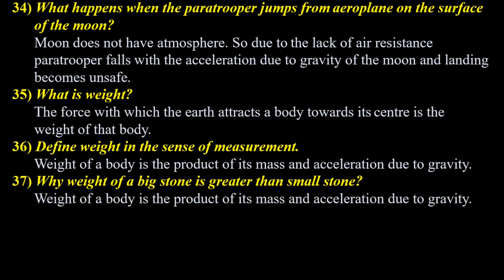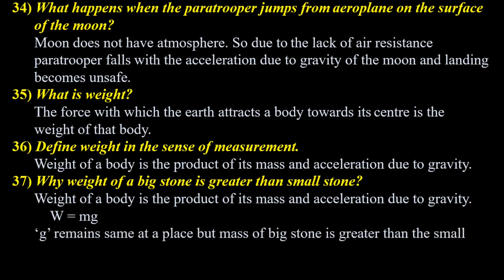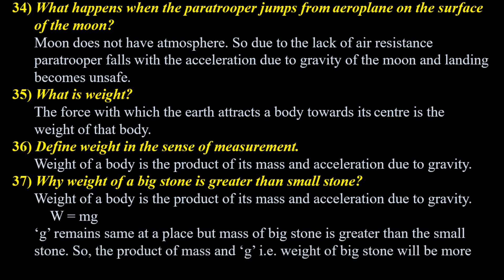Weight of a body is the product of its mass and acceleration due to gravity, denoted by the formula W = mg. And g remains the same at a given place. But the mass of a big stone is greater than the small stone, so the product of mass and g — that is the weight of the big stone — will be more than that of the small stone. We will meet in another class with more questions. This much for today.